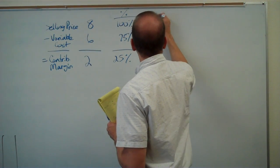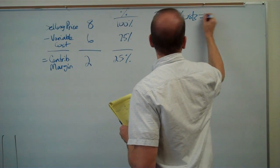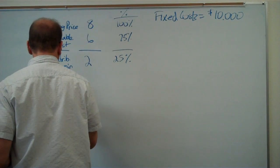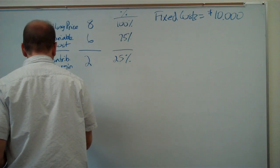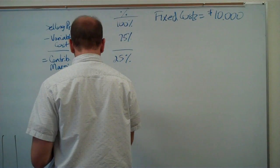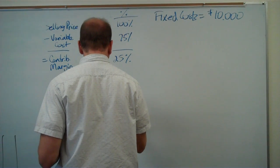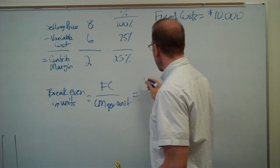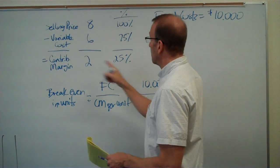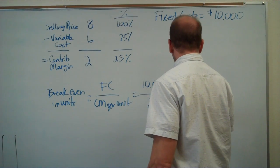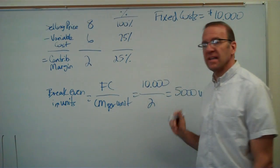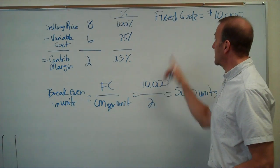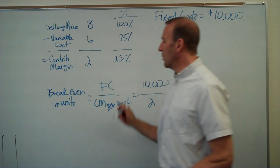Let's assume our fixed costs are $10,000. Break-even in units equals fixed costs divided by contribution margin per unit. So that's $10,000 divided by $2, which gives us 5,000 units. We will break even when we sell 5,000 basketballs, because 5,000 units times the $2 contribution margin equals the $10,000 in fixed costs.